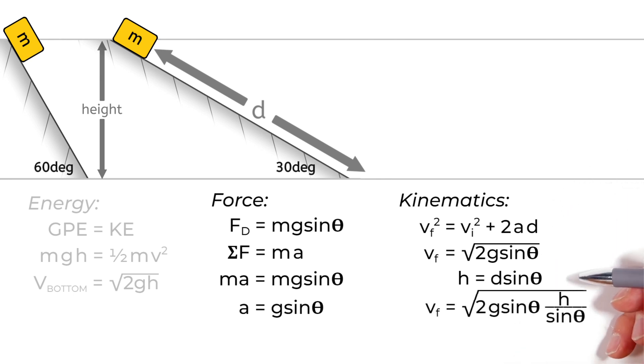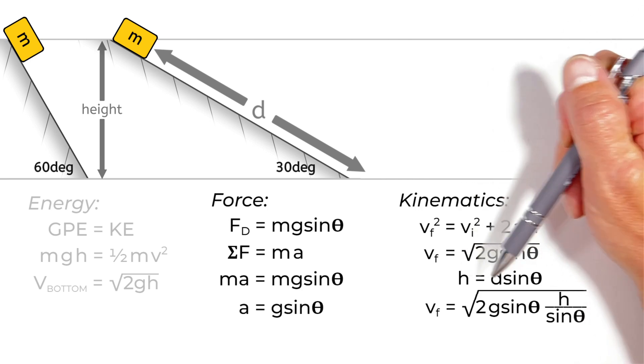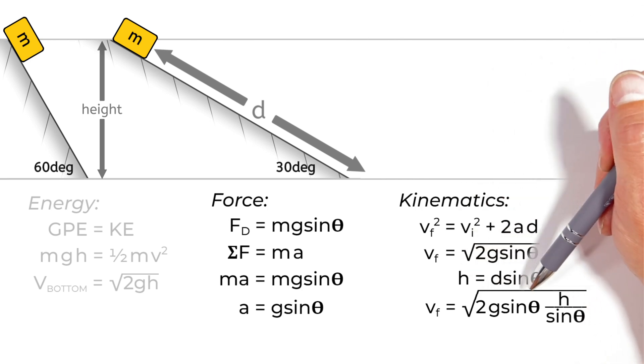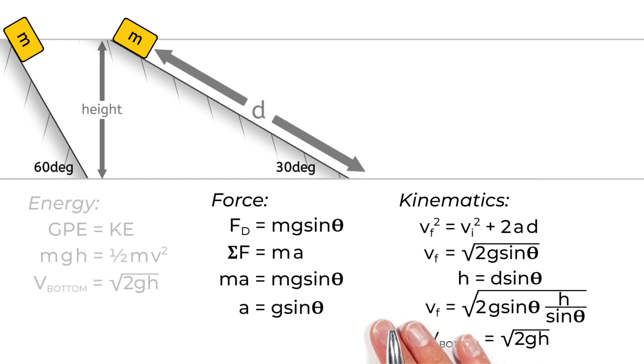And subbing that into our kinematic equation, we find the velocity at the bottom of the hill is given by this function, 2g sine theta h over sine theta. And those sines cancel out. And we find that force and kinematics leave us at the same result that we had over here when dealing with energy.